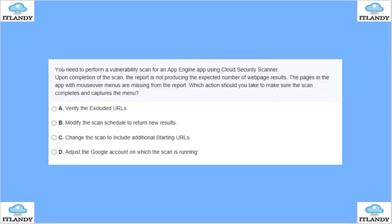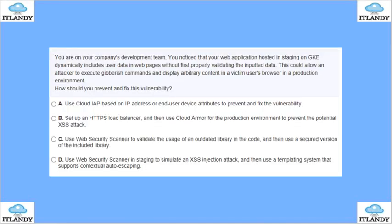You need to perform a vulnerability scan for your app via Cloud Security Scanner. Upon completion of the scan, the report is not producing the expected number of web results. Pages in the app with mouseover menus are missing from the report. Which action should you take to make sure the scan completes successfully and captures the menu parts? Options include verifying excluded URLs, modifying the scan schedule, changing the scan to include additional starting URLs, or adjusting the Google account. Make sure you include additional scanning URLs.